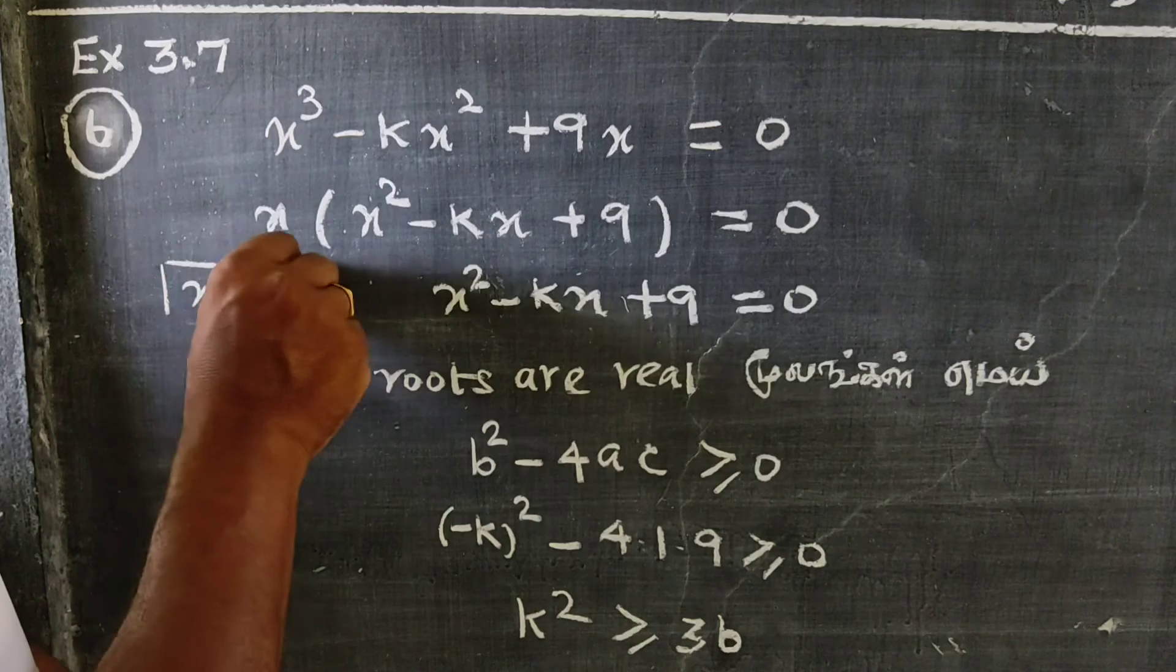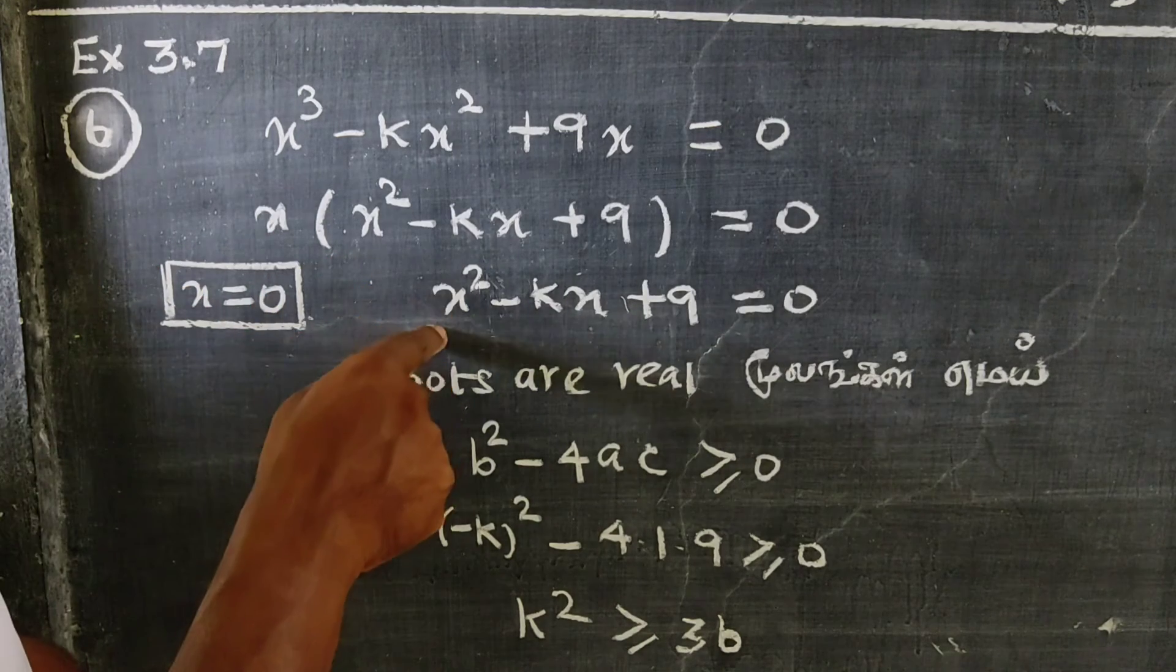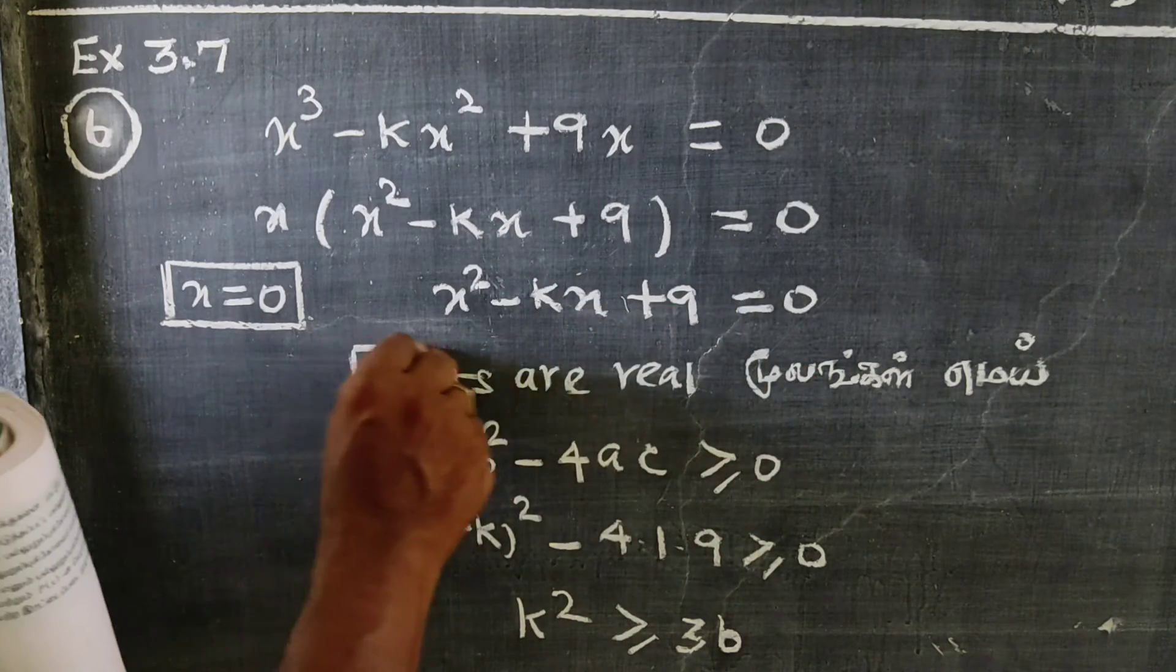This product is 0, so x = 0 is one root. For the quadratic x² - kx + 9 = 0, the roots must be real.